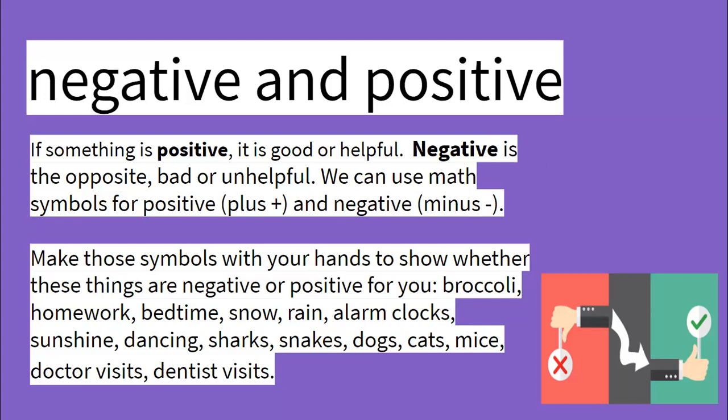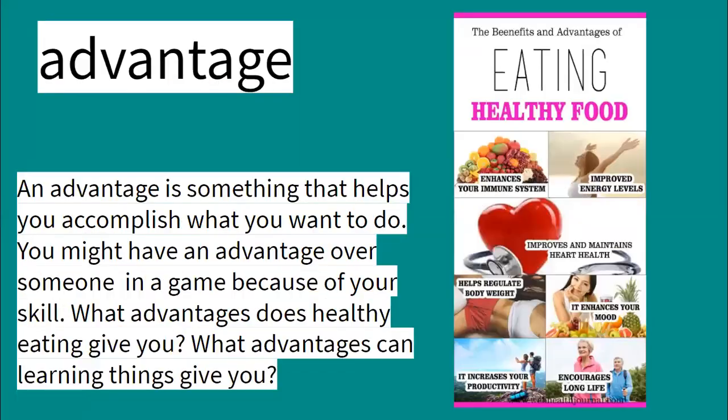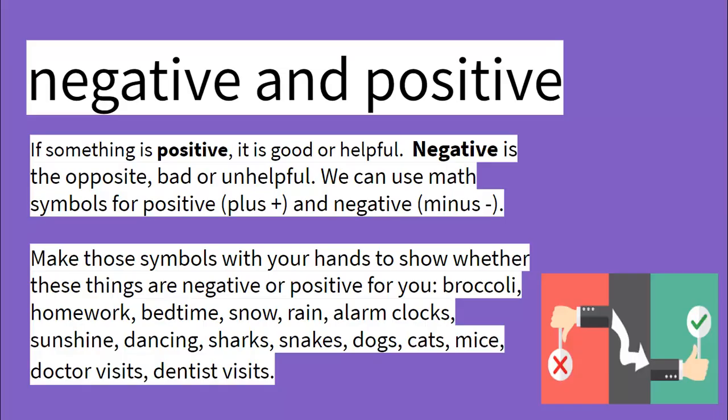Make these symbols with your hands to show whether these things are negative or positive. Or you can do a thumbs up for positive and thumbs down for negative. So is broccoli negative or positive for you? Thumbs up or down? Good. A lot of thumbs up. What about homework? This might have mixed ups, positives and negatives. It's good to practice your work. Some of you might not like it.